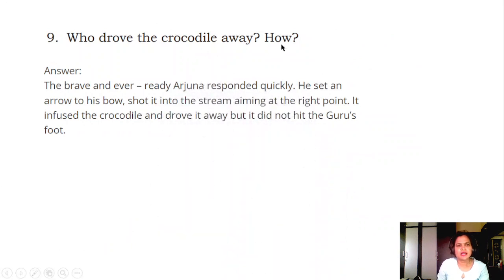Question 9: Who drove the crocodile away? How? Answer: The brave and ever ready Arjuna responded quickly. He set an arrow to his bow, shot it into the stream aiming at the right point. It hit the crocodile and drove it away, but it did not hit the Guru's foot.